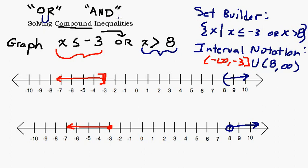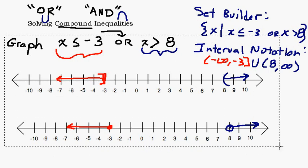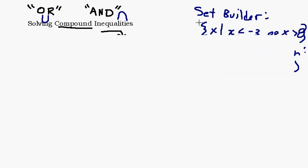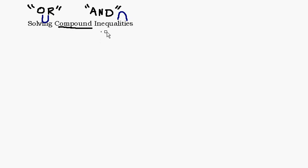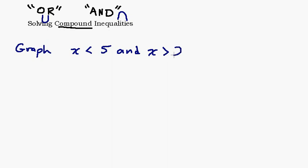On the other hand, 'and' is associated with intersection. Let's try an 'and' problem — an easy one just to see what the graph looks like. Let's say we want to graph all the x's where x is less than 5 and x is greater than 2.